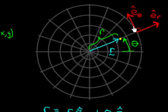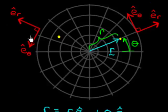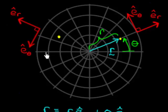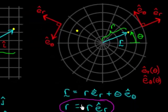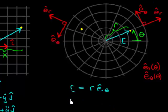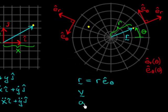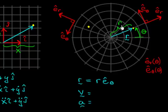If my particle is at one location, e-hat-r and e-hat-theta are as drawn. But if my point moves elsewhere, e-hat-r and e-hat-theta move with it — e-hat-r always points radially outward from the origin, and e-hat-theta points in the direction of increasing theta. So e-hat-r and e-hat-theta are basis vectors that depend upon theta. The challenge now is to write velocity and acceleration in terms of r, theta, r-dot, theta-dot, r-double-dot, and theta-double-dot, expressed in e-hat-r and e-hat-theta.